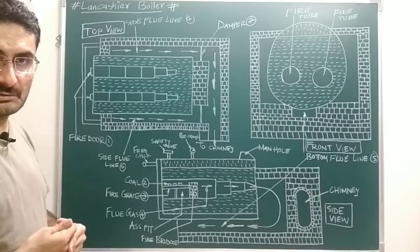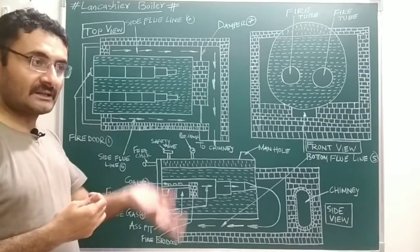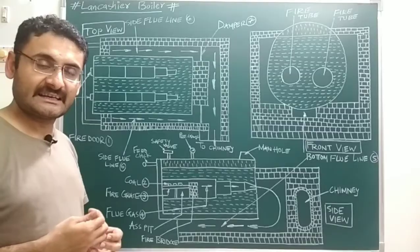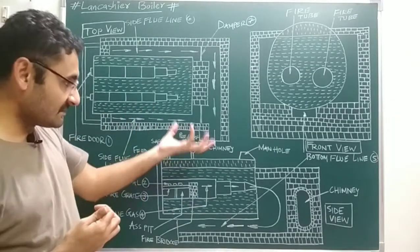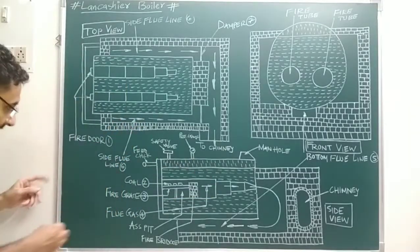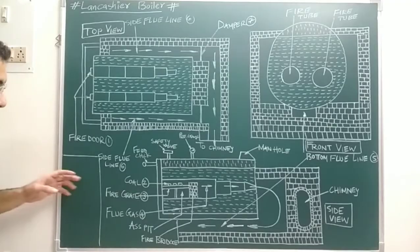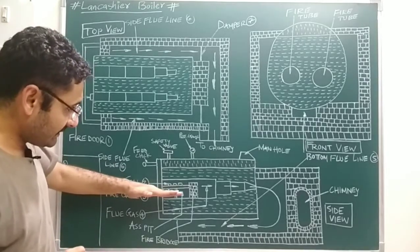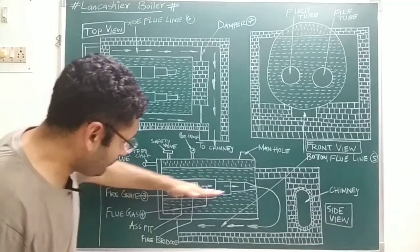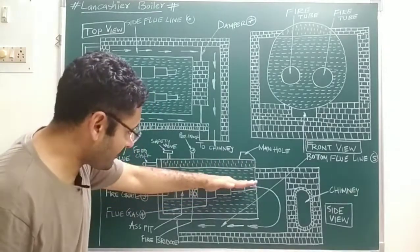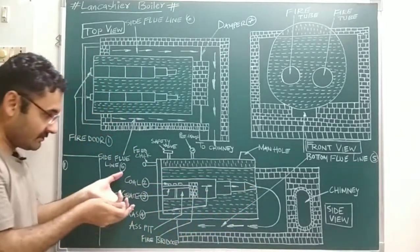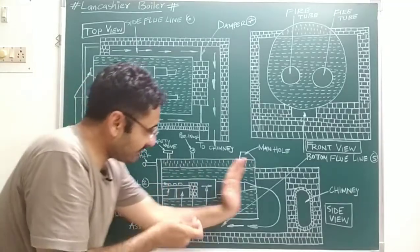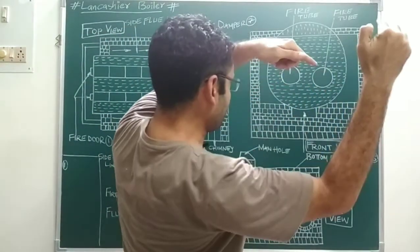Boilers are used to heat water so that it is converted into high-pressure, high-temperature steam. In the Lancashire boiler, heating of water takes place in three stages. In the first stage, flue gases move from front to back inside the fire tubes — combustion of coal takes place at the front, and flue gases travel toward the back.